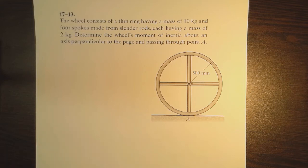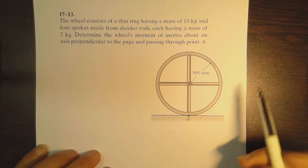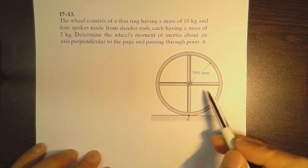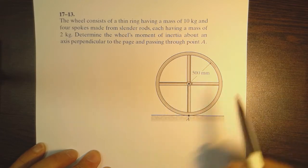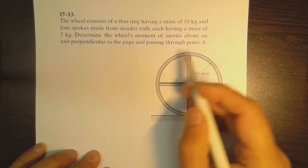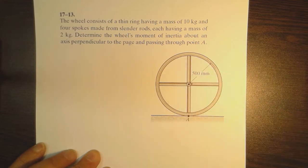Good evening and welcome to this short tutorial on calculating the moment of inertia of a composite object. This composite object consists of a ring and four slender rods or spokes making a wheel or wagon wheel.